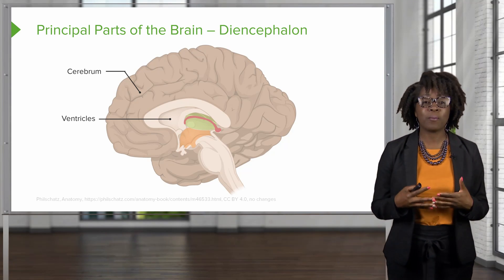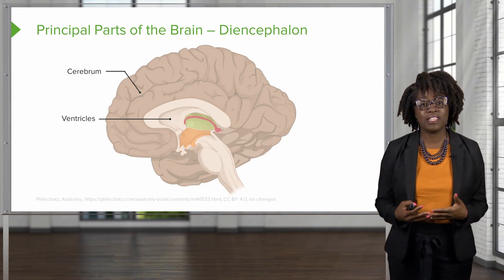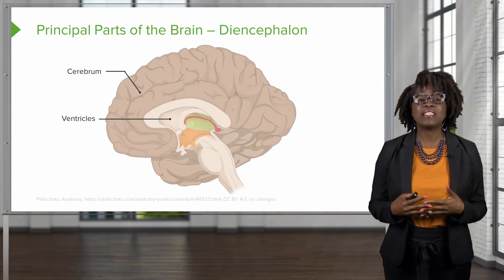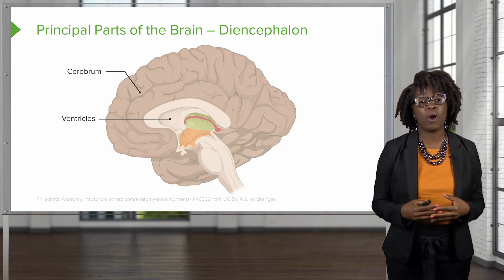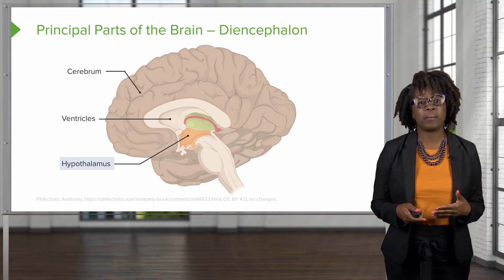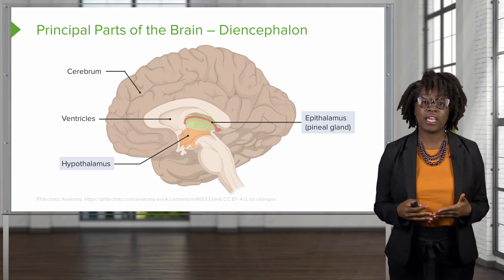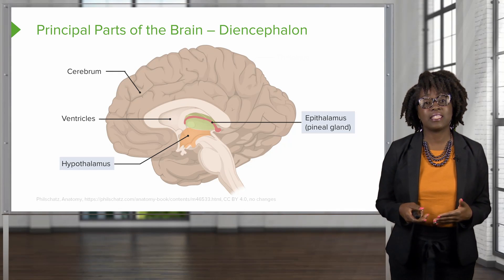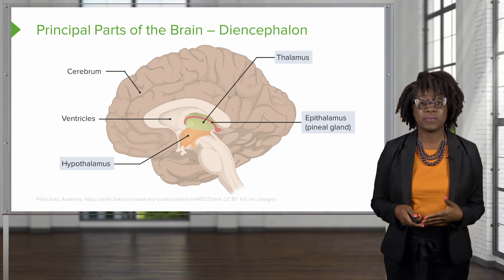The next part of the brain is the diencephalon. The diencephalon is made up of three major parts: the hypothalamus, the epithalamus, and the thalamus.